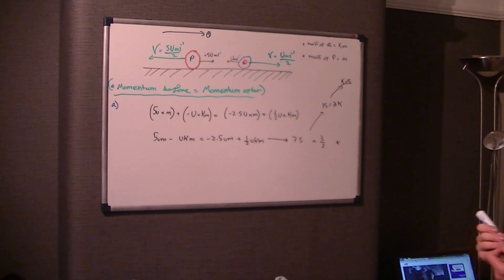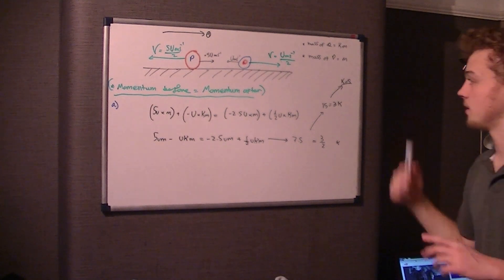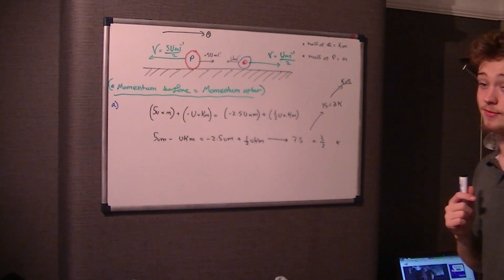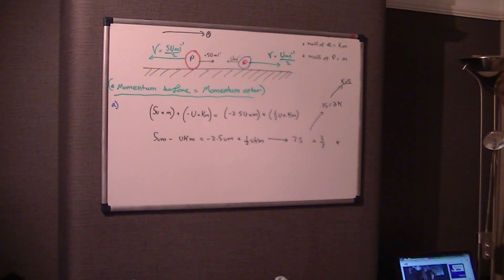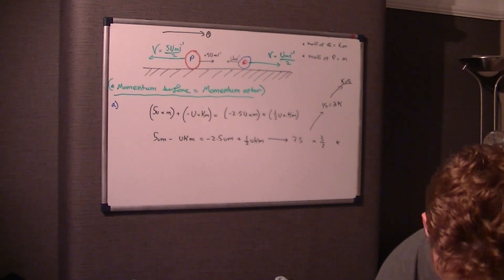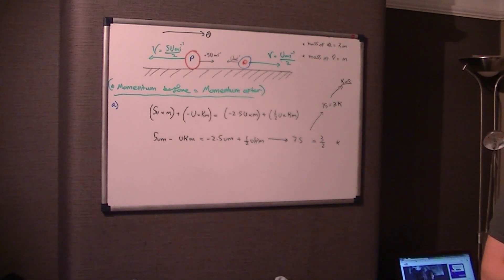You could say the mass of Q is 5M by just simply replacing the K with 5. So that's part A over and done with. Part B says, find the magnitude of the impulse exerted on P by Q in a collision.